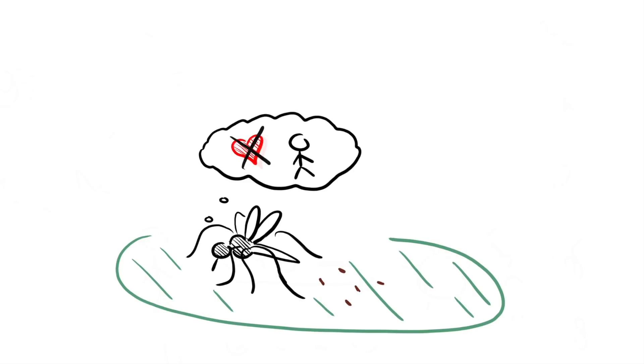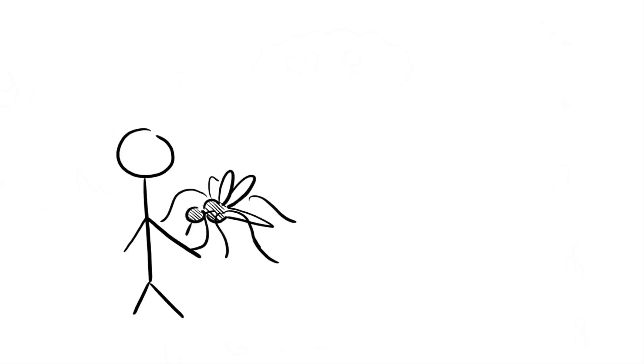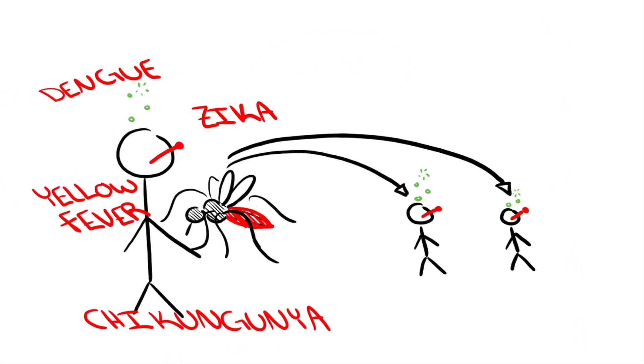Shortly after she lays her eggs, she goes on the hunt again. This cycle of blood feeding and egg laying makes the female Aedes aegypti mosquito a great disease vector. If the first human she bit was infected with a virus like dengue, zika, yellow fever, or chikungunya, now her second and third human victims are going to get sick.